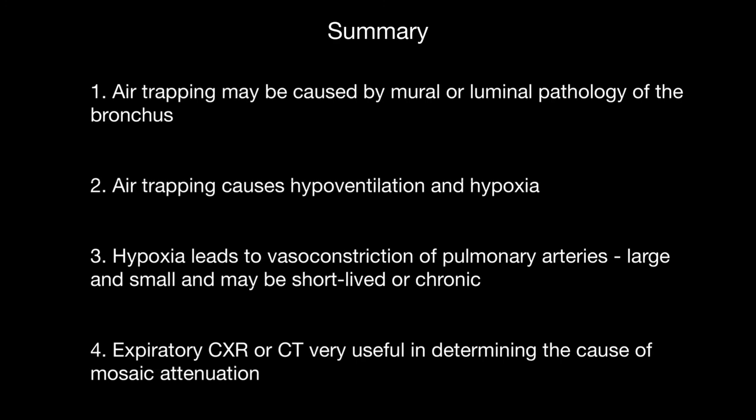In summary, air trapping may be caused by diseases of the bronchial wall or diseases within the lumen. Granulomatous infiltration of the wall or fibrosis secondary to bronchiolitis obliterans will lead to bronchial narrowing during expiration and air trapping. A long-standing carcinoid tumour can also lead to air trapping. Air trapping leads to hypoventilation and ultimately hypoxia, which causes vasoconstriction of pulmonary arteries — large and small — and may be short-lived or chronic. Expiratory chest X-rays or CTs are very useful in determining the cause of mosaic attenuation.